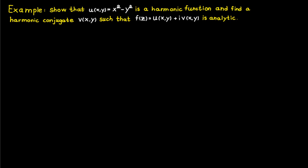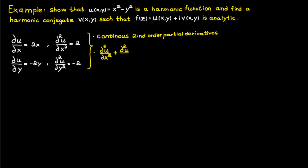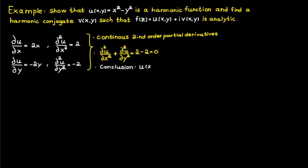The first step in showing that u is harmonic is to determine the second-order partial derivatives. The second-order partial derivative of u with respect to x is equal to 2, while the second-order partial derivative of u with respect to y is equal to minus 2. From this we can see that u has continuous second-order partial derivatives and satisfies the Laplace equation, so u satisfies all the necessary conditions for a harmonic function.